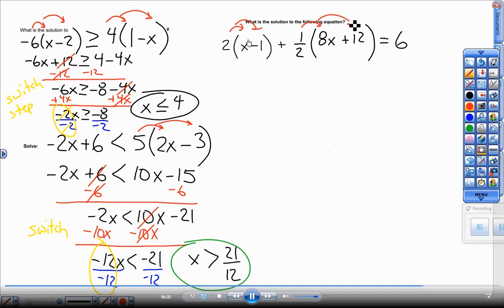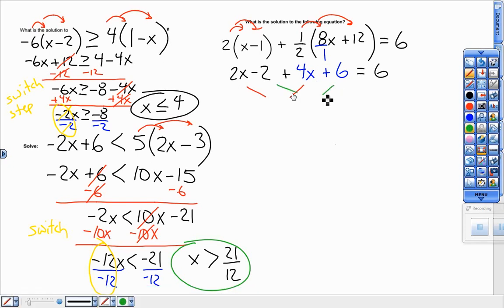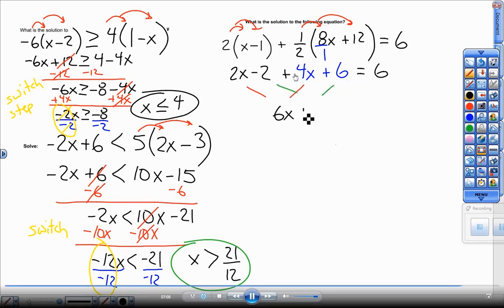Alright, this one. Distribute the 2. 2X minus 2 plus 1 half times 8X is half of 8X or 8X over 2. But no matter what, 8X over 2, half of 8X, 4X. Half of 12 or multiplying 12 times 1, 2 times 1, 12 over 2, 6. Equal to 6. Half of 12, 6. Half of 8X, 4X. Combine the 4X and the 2X to get 6X. Combine the negative 2 and 6 to get positive 4. 6X plus 4 equals 6. Take away 4 on both sides. Minus 4, minus 4. Gives me 6X equals 2. And then divide by 6. I'm going to get a positive fraction, 1 third.